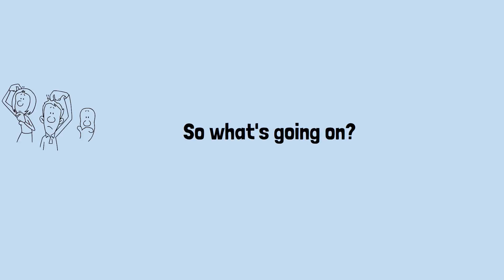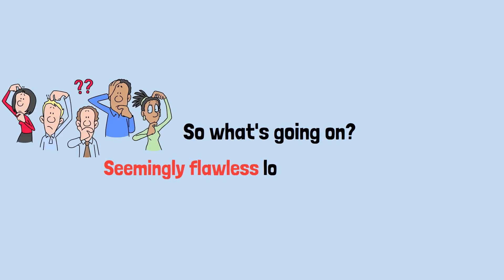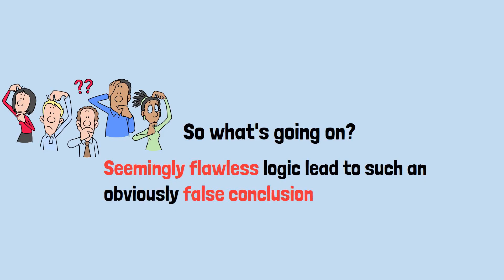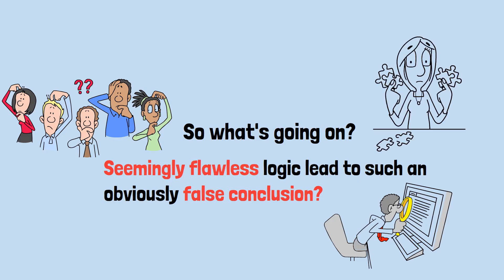Race cars pass bicycles, jets overtake birds. Common sense tells us that Achilles should easily overtake that tortoise. So what's going on? How can such seemingly flawless logic lead to such an obviously false conclusion?